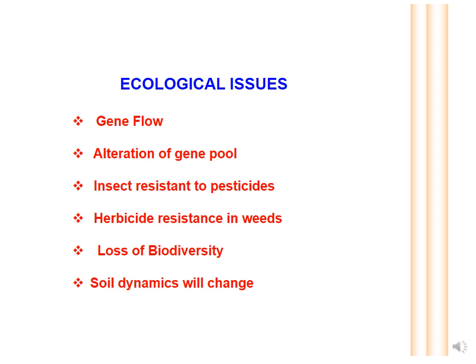The second major concern is ecological. There is apprehension that gene flow from GMOs to other plants or organisms will alter the gene pool. There are also fears that insects will develop pesticide resistance, and that herbicide-resistant weeds could form through gene transfer from GMOs to nearby weeds. All this could lead to loss of biodiversity through monoculture and changes in soil ecosystem dynamics.